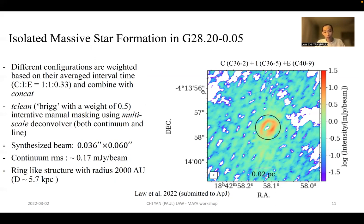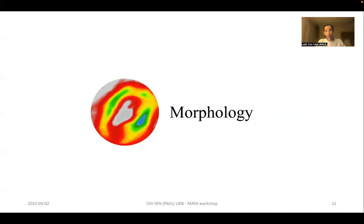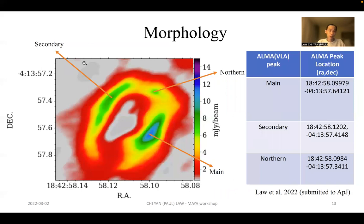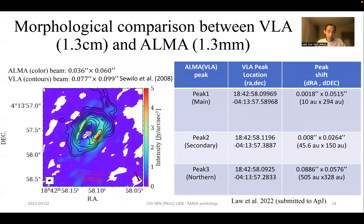Here we show the combined final continuum image with a synthesized beam size of 0.036 by 0.06 arcseconds and continuum RMS of 0.17 millijanskys per beam. We immediately see this ring-like structure with a radius around 2000 AU, assuming a distance of 5.7 kiloparsecs. We want to study the morphology of this continuum image, and we identify three continuum peaks. The details are summarized in the table on the right. We also searched the archival data and found VLA 1.3 centimeter data. We overlaid the VLA data in black contours on top of ALMA data using the color scale. We can see this striking similarity in morphology but with some shift.